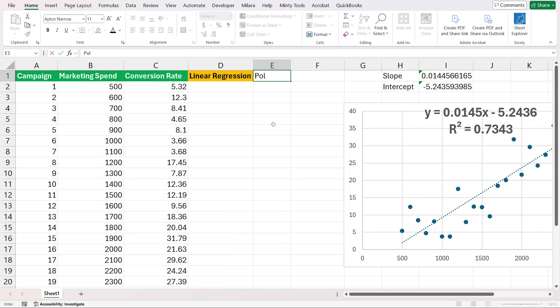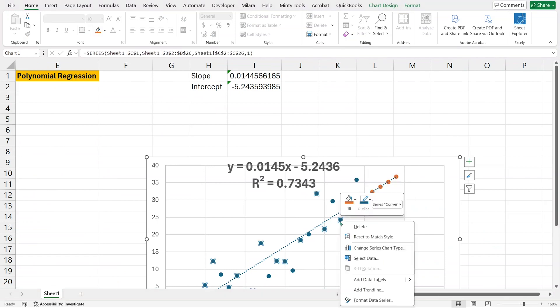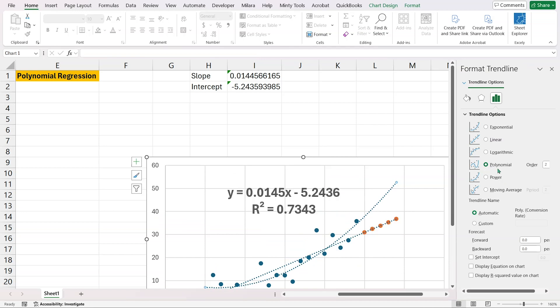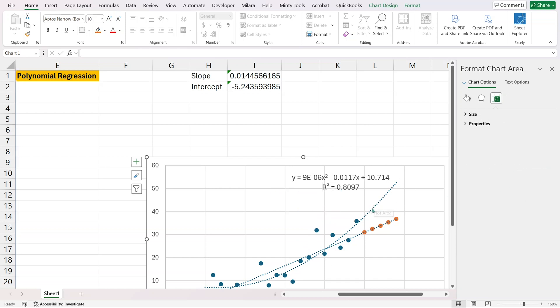So for our polynomial regression, let's add another trend line. Select those, add trend line, switch it to polynomial and make it an order of two. I'm going to remove this equation, select my polynomial, and say show equation and display R squared. Let me bring back the other trend line and show the R squared. You see that the R squared for the polynomial regression is higher than the R squared for the linear regression, meaning that a polynomial regression of a second order better fits our data.